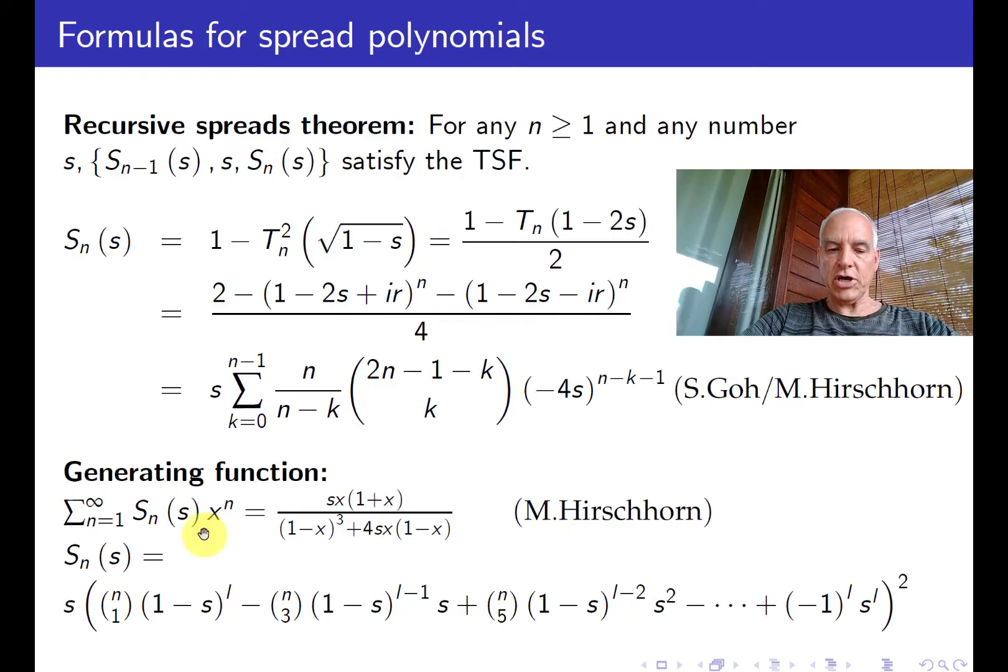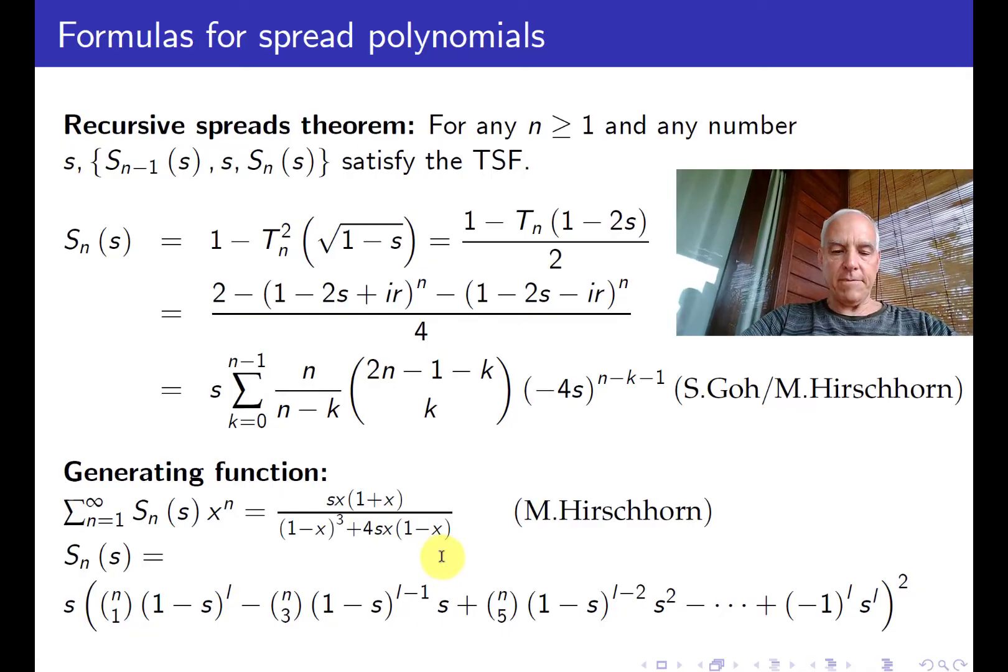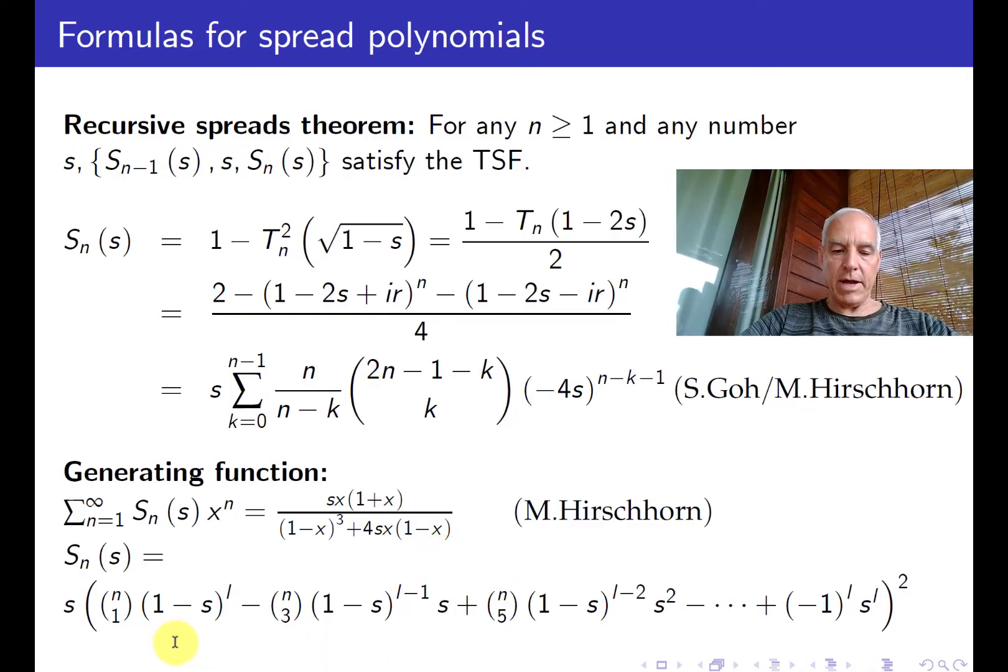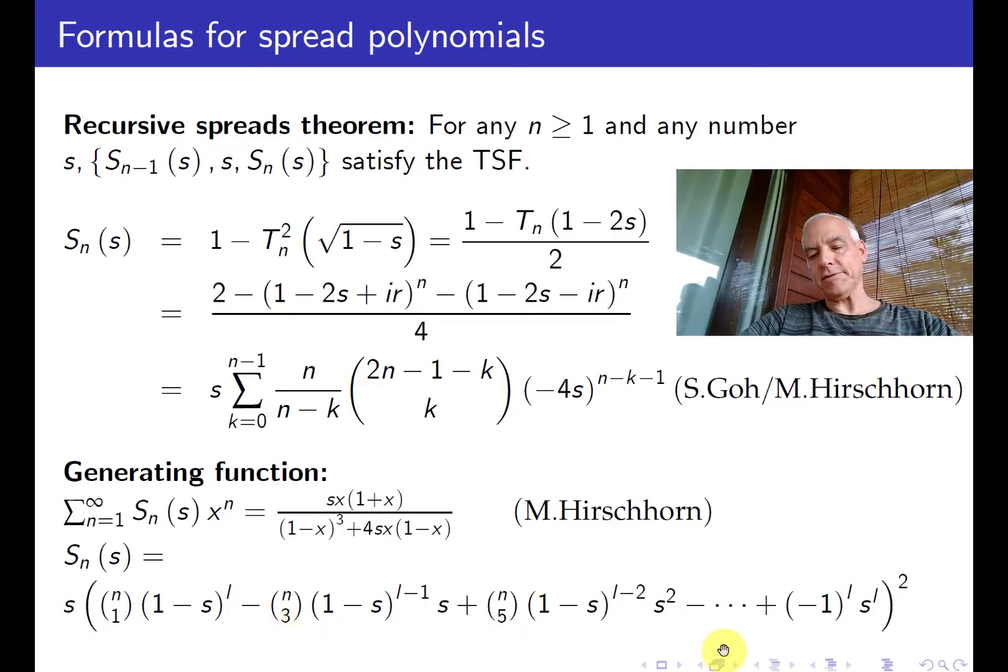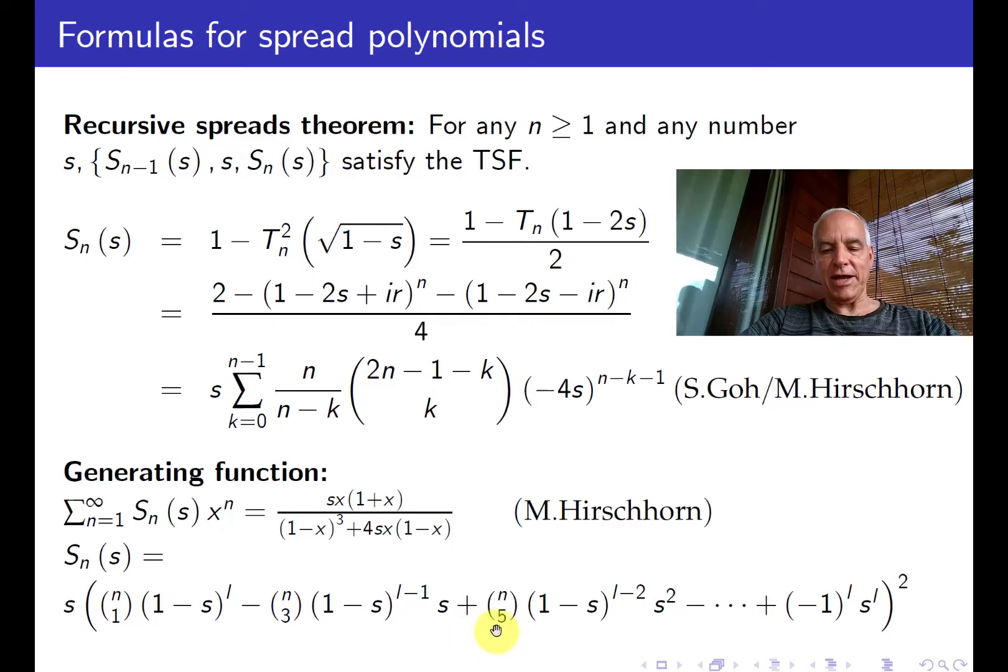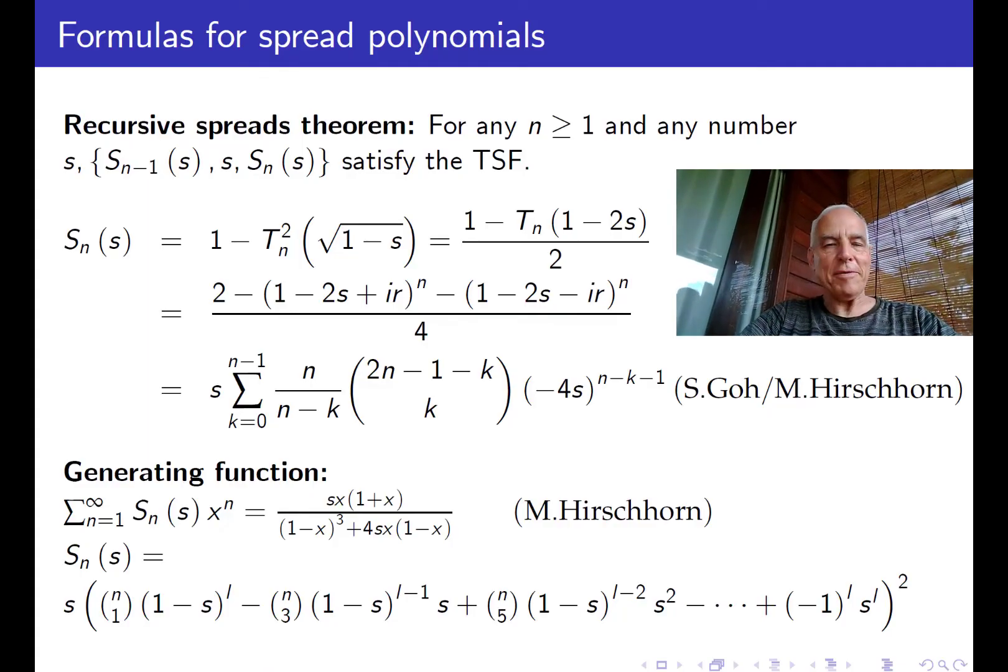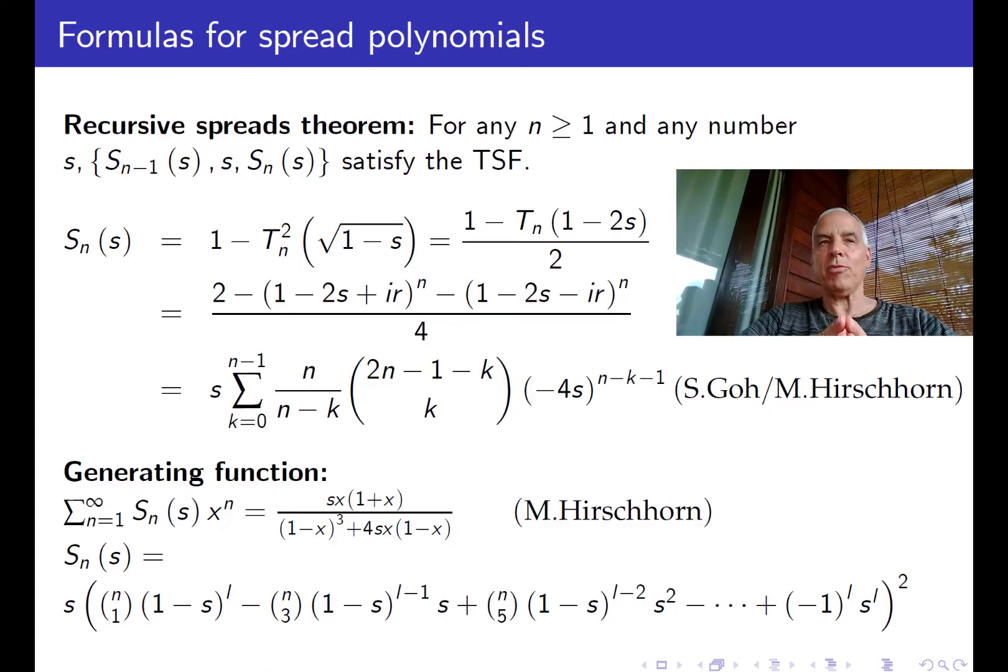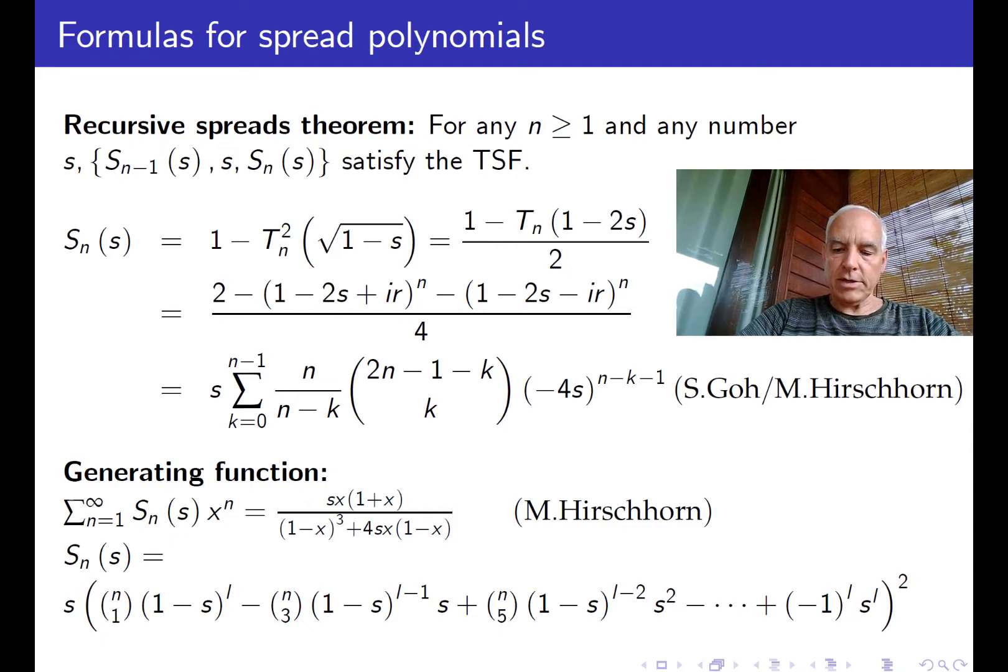We also have a generating function found by Mike Hirschhorn. The ordinary generating function for Sₙ(S) is SX(1+X)/[1-X³+4SX(1-X)]. Another formula also found by Mike Hirschhorn is that Sₙ(S) can be written as a binomial expansion involving powers of (1-S) and S but with these odd binomial coefficients: n choose 1, n choose 3, n choose 5, etc. There's probably a lot more formulas to be found about these things.